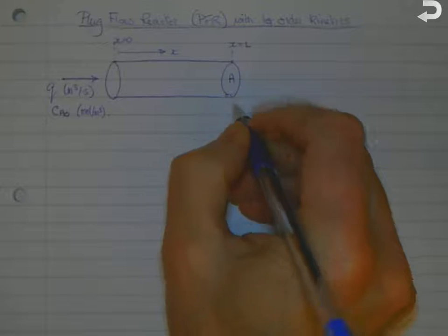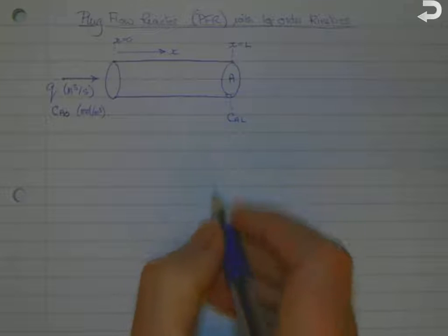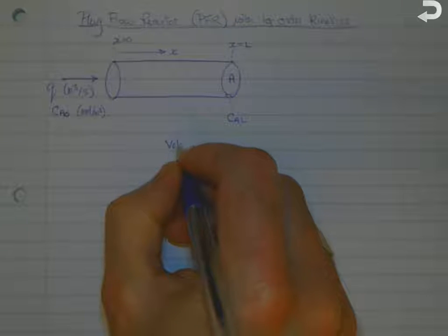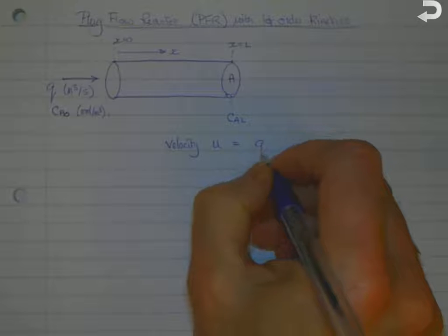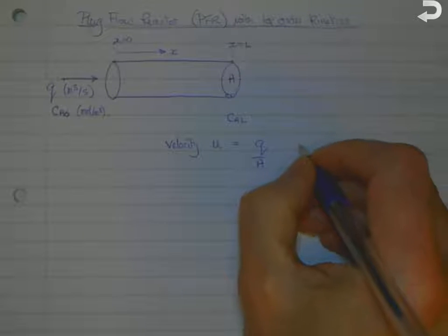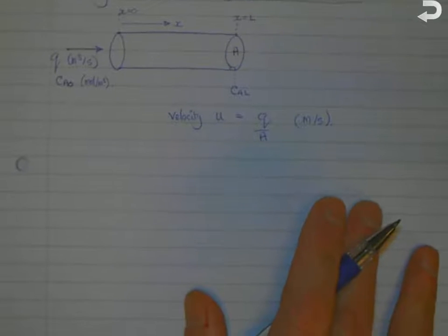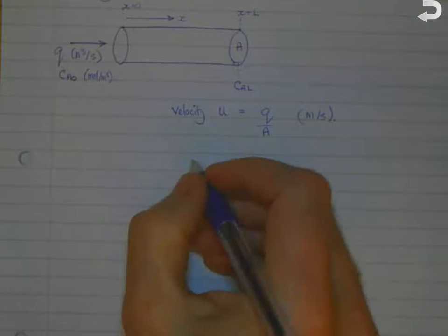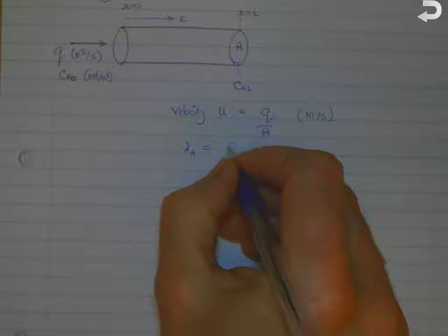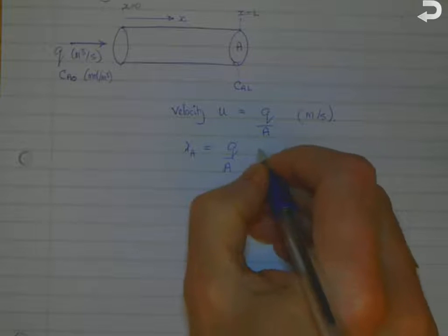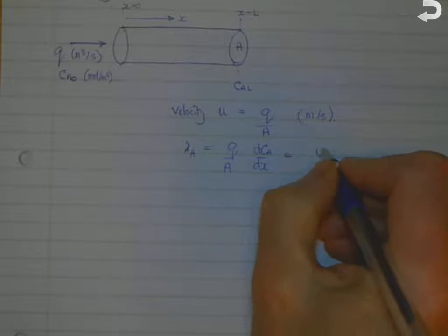And at the outlet the concentration of our starting material we're going to say C_A L. Just to simplify the maths a little bit, we're going to say that the velocity is equal to Q over A, and that's in meters per second. So the equation that was derived previously for a plug flow reactor was that r_A equals Q over A times dC_A by dx.